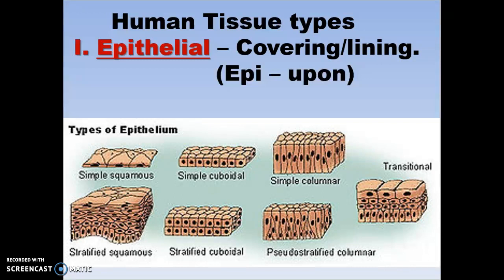Transitional will look like the picture on the right. When the bladder is empty versus when the bladder is full, it stretches, so it gets to look like a stratified squamous of sorts.